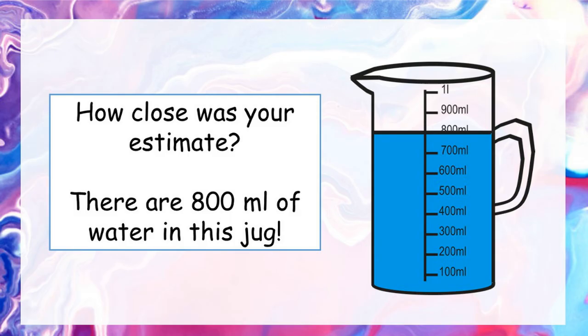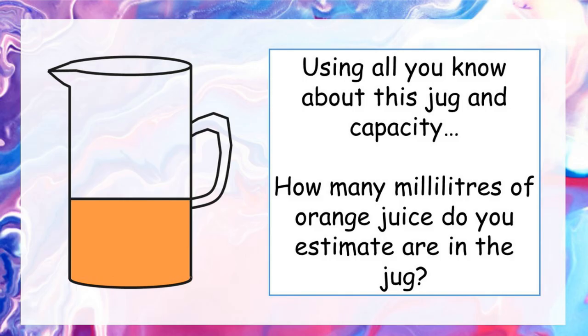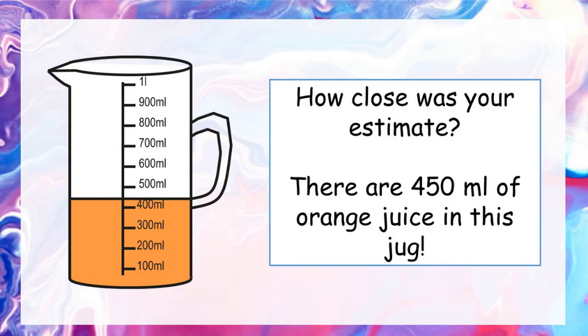Using all you know about this same jug and about capacity, how many millilitres of orange juice do you think are in this jug? Pause the video and write down your best estimate. There are 450 millilitres of orange juice in this jug. Using your knowledge of capacity and this jug, you would realise there's about half the jug filled, and half of a litre is 500 millilitres, so anything near that is a good estimate.